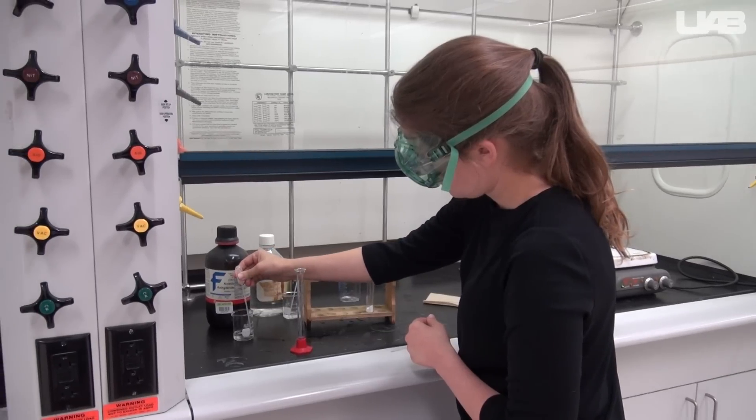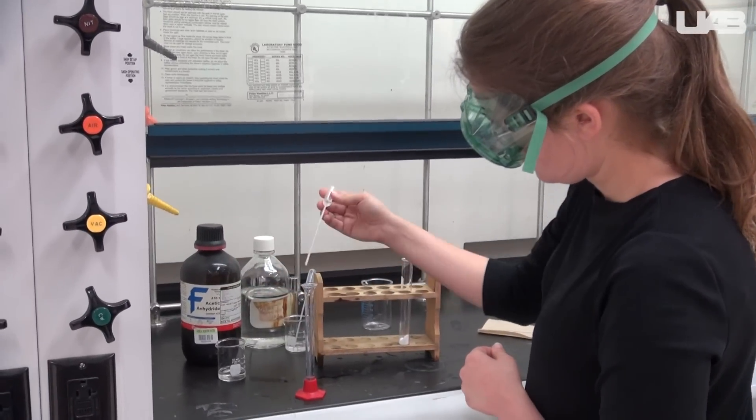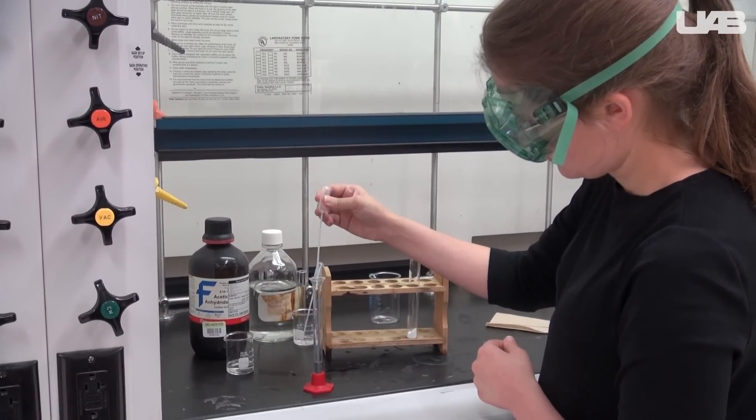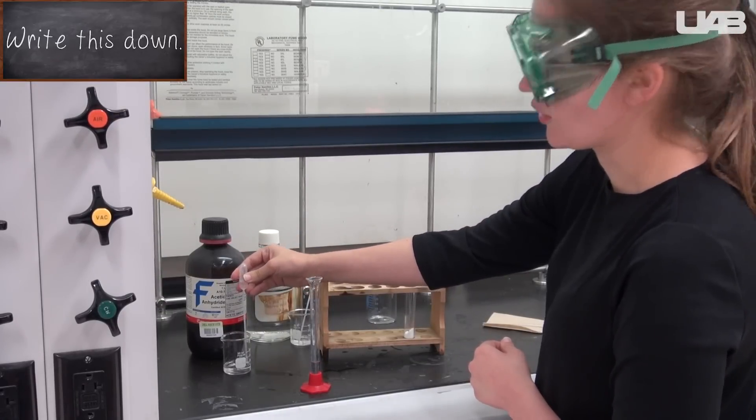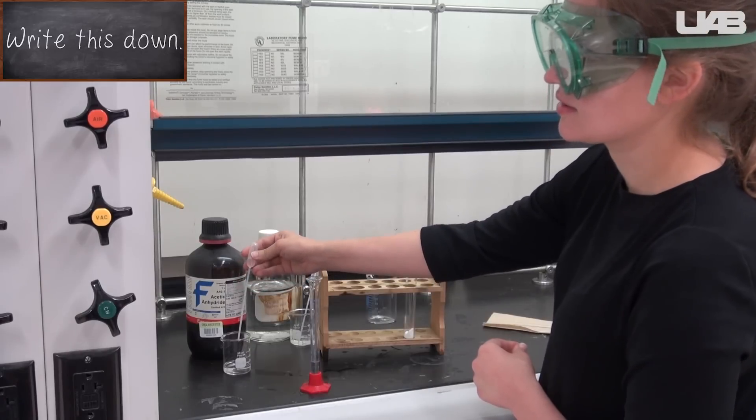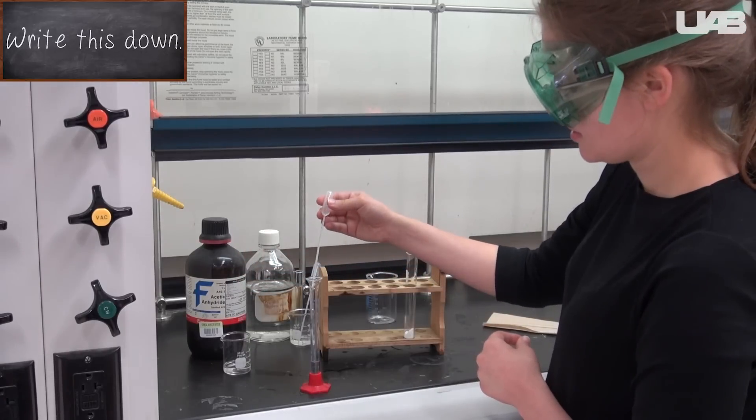You will find the acetic anhydride in the fume hood. Obtain about 3.5 milliliters of acetic anhydride. This chemical can be dangerous, so make sure you are never pointing the open end of the test tube towards yourself or anyone else.